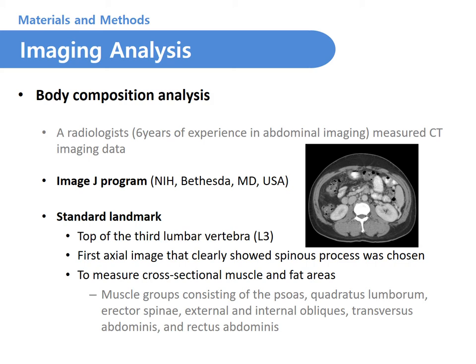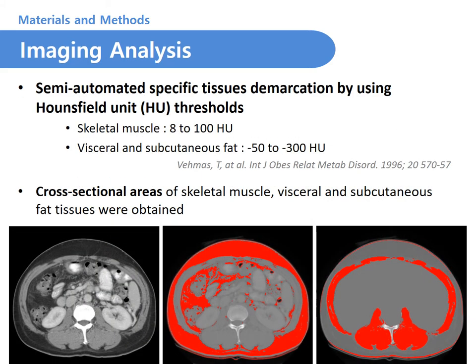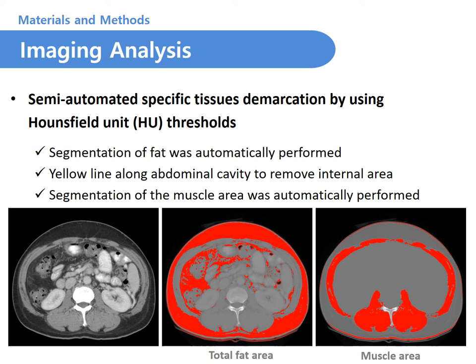To perform body composition analysis, we used the ImageJ program. The top of the third lumbar vertebra, which clearly showed the spinous process, was chosen as the standard landmark to measure cross-sectional muscle and fat areas. Semi-automated specific tissue demarcation using Hounsfield unit thresholds was performed. Three compartments of interest were skeletal muscle and visceral and subcutaneous fat. Segmentation of fat was automatically performed, and the peritoneal line was manually outlined, then segmentation of muscle area was automatically performed.